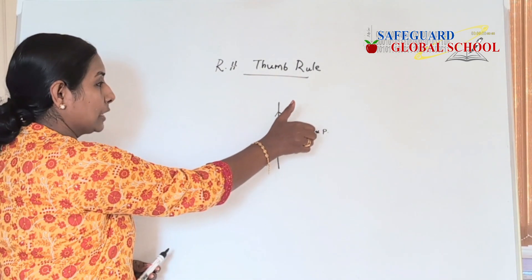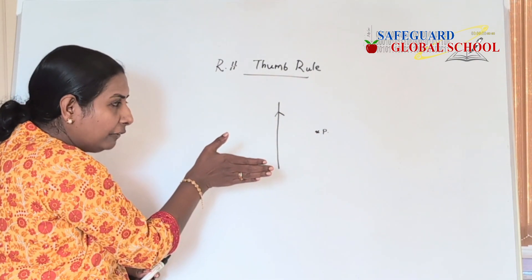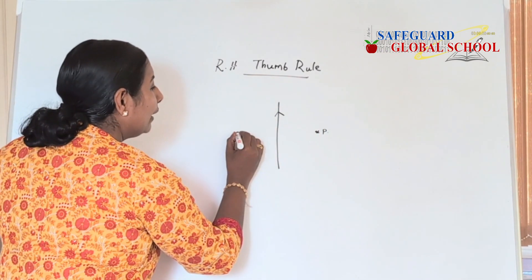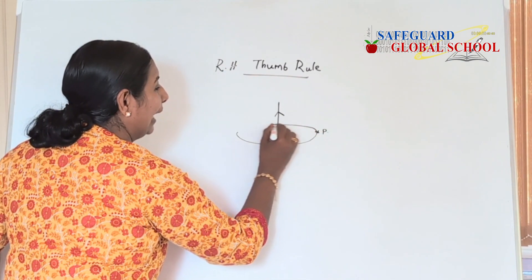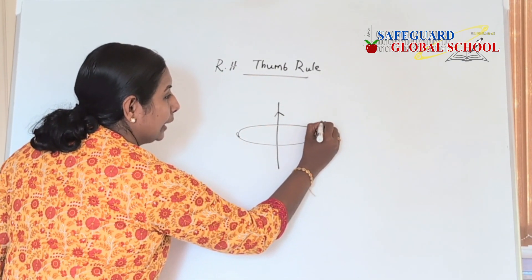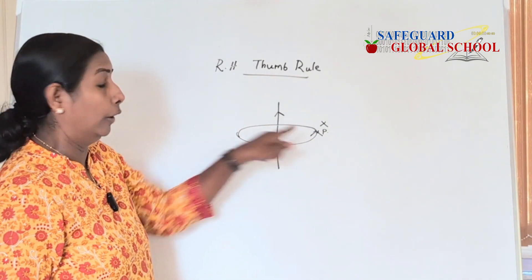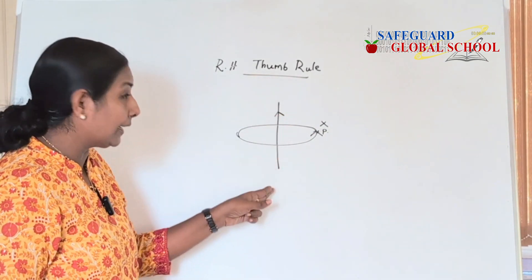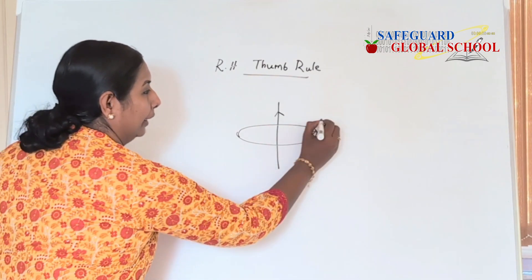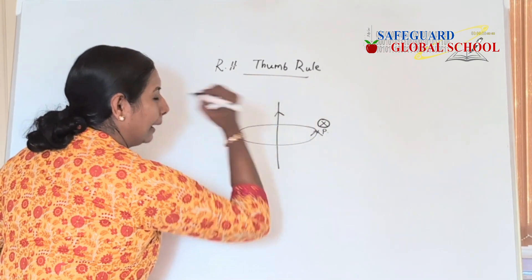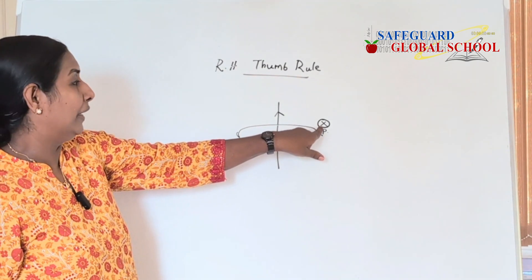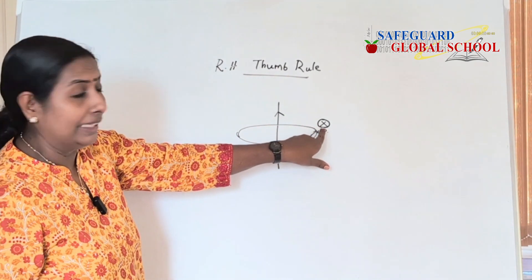We are grasping the conductor and the curling of the fingers is towards this direction. So when we draw a magnetic field line around it, the direction of the magnetic field is into the plane of this board. When we place the conductor on this board — into the plane of the board — we use a symbol like this to represent a magnetic field going into the plane.